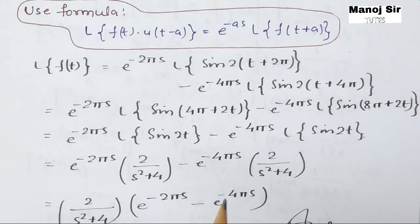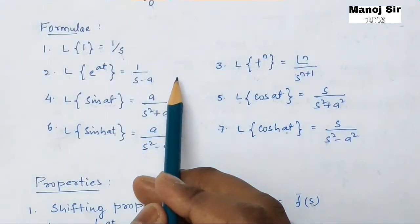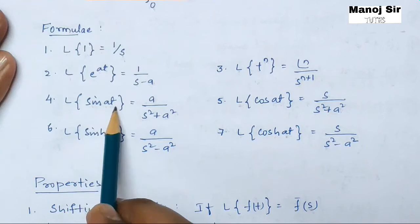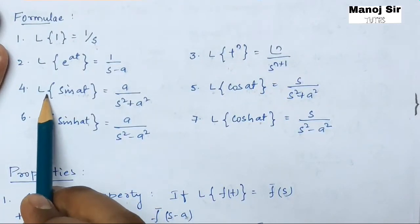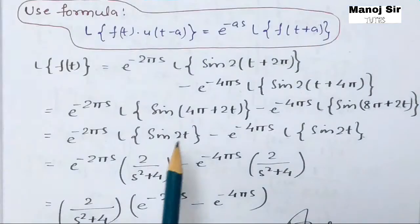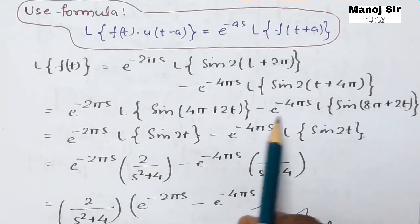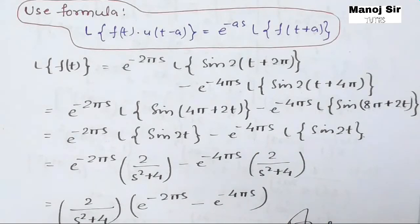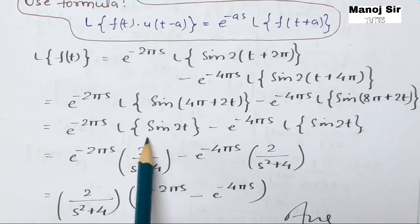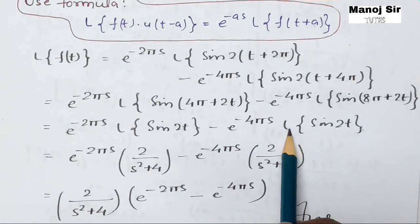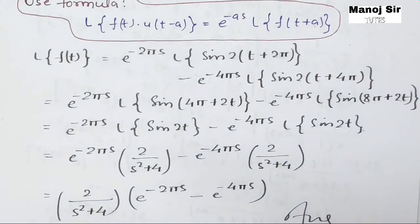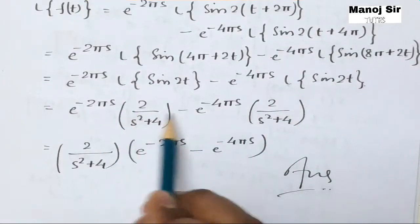Using the formula L{sine(at)} = a / (s² + a²), and comparing with sine(2t) where a = 2 in both terms, we get: e^(−2πs) · [2 / (s² + 4)] − e^(−4πs) · [2 / (s² + 4)].